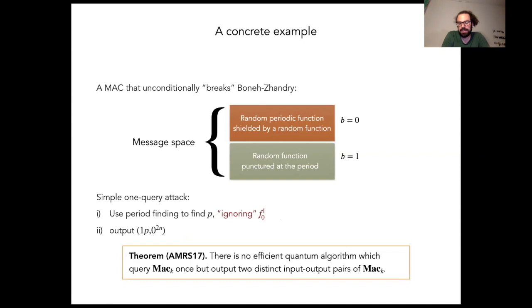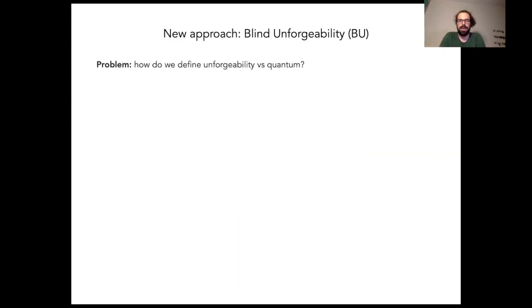This is difficult to prove, it turns out, and a key step is to show that if an attacker wants to learn anything about the period P, then this ignorance of the random part of the output is necessary. So after giving this convincing counterexample, we have moved on to proposing a replacement definition, which we call blind unforgeability.